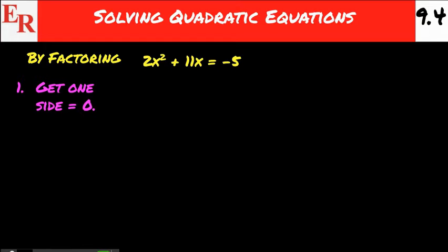In class, you would have learned to get one side equal to 0. Because we're going to be factoring, we like this number in front of the x squared to be positive. So we're going to leave the 2x squared and the 11x right where they are.